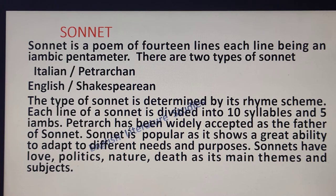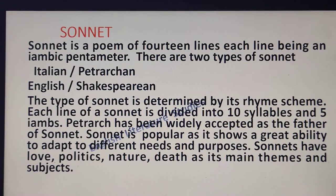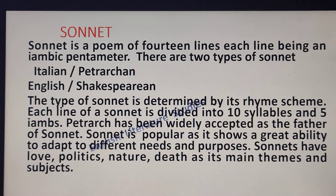A sonnet is a poem of 14 lines, each line being an iambic pentameter. There are two types of sonnet: Italian or Petrarchan, and the second type is English or Shakespearean. The type of sonnet is determined by its rhyming scheme. Each line of a sonnet is divided into 10 syllables and 5 iambs. Petrarch has been widely accepted as the father of the sonnet.